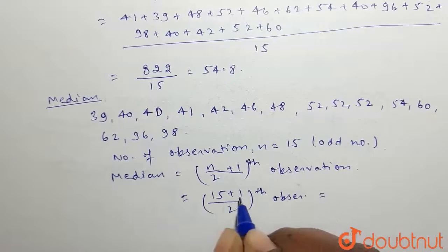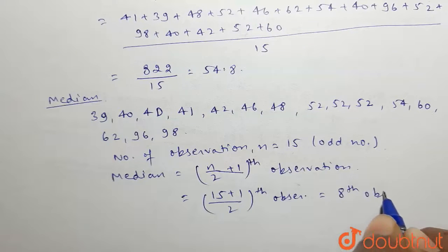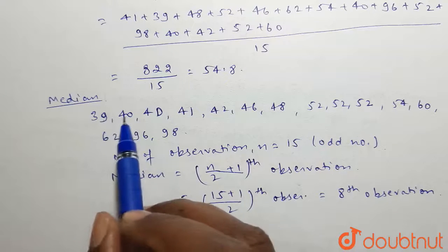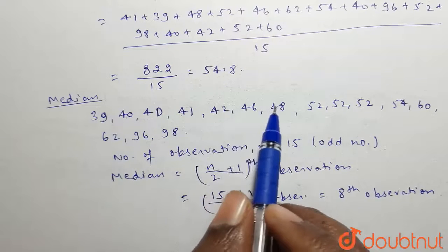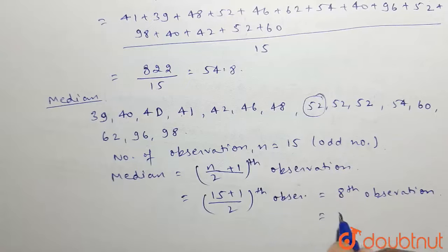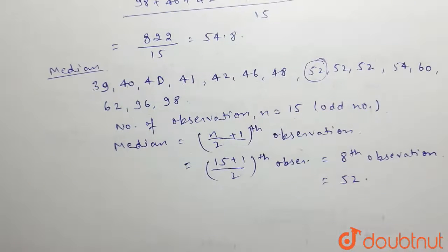What is the 8th observation? Counting: 1, 2, 3, 4, 5, 6, 7, 8. The 8th observation is 52, so the value of median is 52.